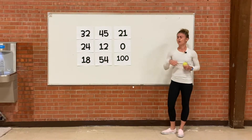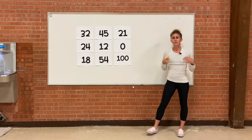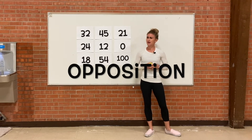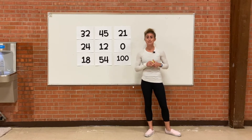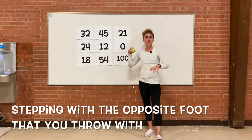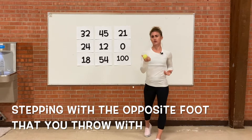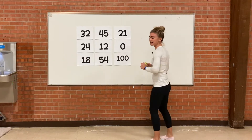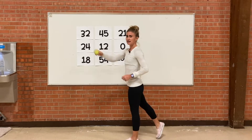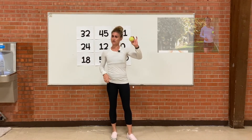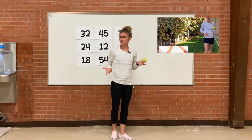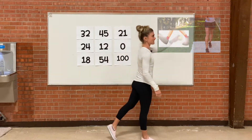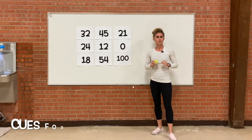But first, before we get started on the multiplication throwing, I want you to remind me what opposition means. Opposition means stepping with the opposite foot that you throw with. So if you're right-handed, you step with your left foot. If you're left-handed and you throw with your left hand, you step with your right foot.